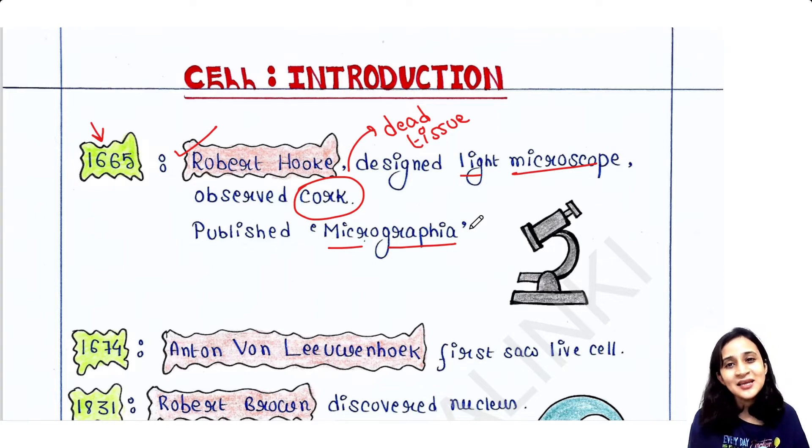After that, in 1664, the person Anton von Leeuwenhoek was the first person who first saw live cell. So he basically took some pond water and observed under the microscope. First time he saw algal cell, so it was the live cell he first time discovered.